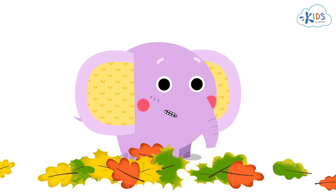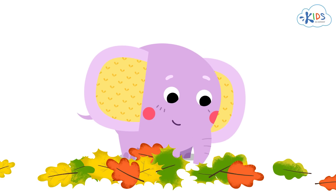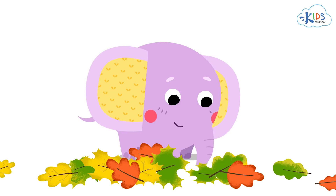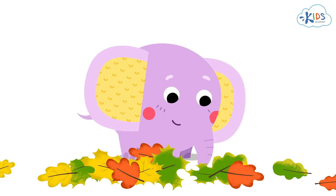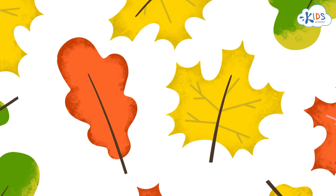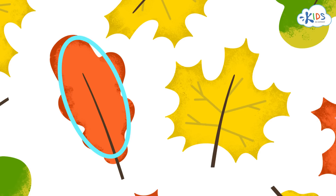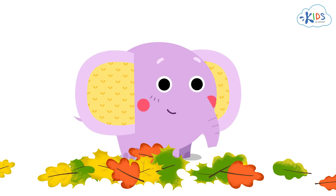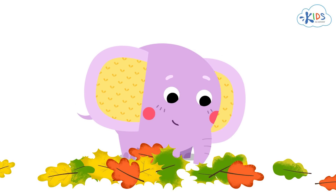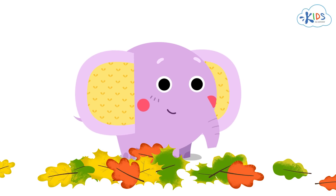Hmm, what else is different? Look carefully. There are leaves of different trees in this heap. They don't look the same. The shapes of a maple leaf and an oak leaf are different. The oak leaf looks like an oval with a wavy edge, and a maple leaf looks like a star! Try to sort this heap into two groups, maple leaves and oak leaves.